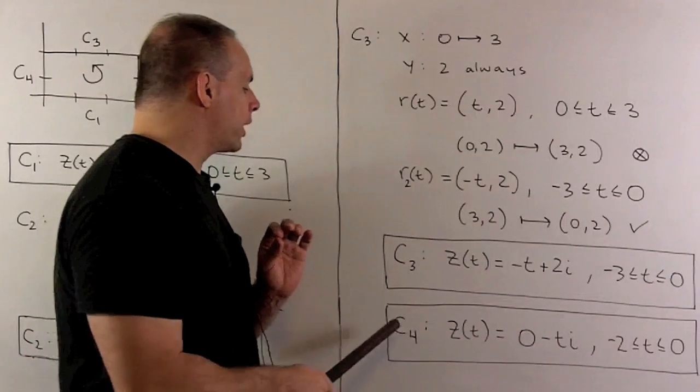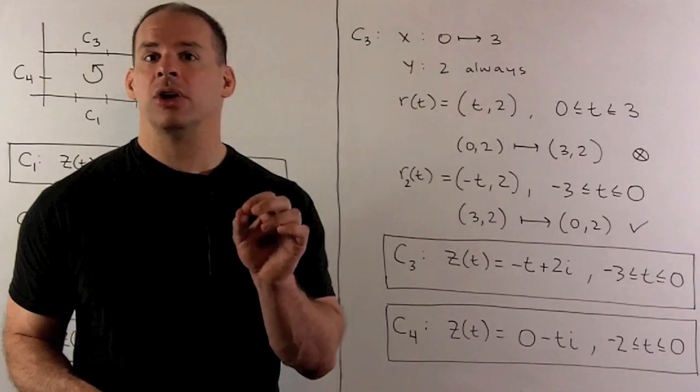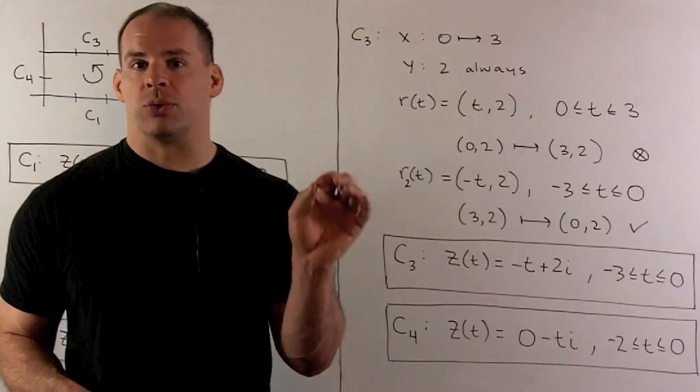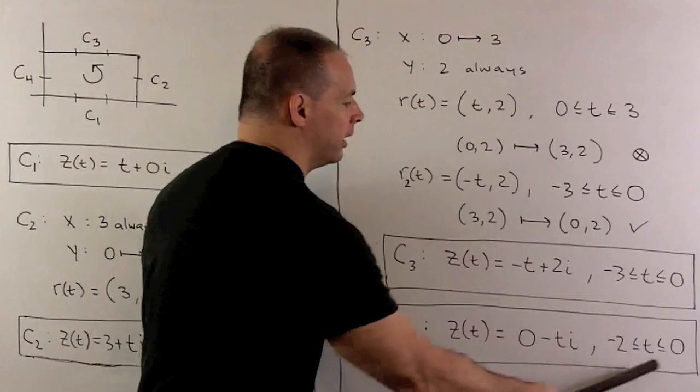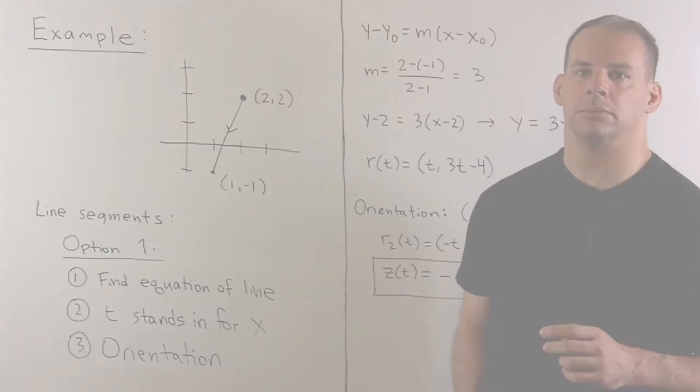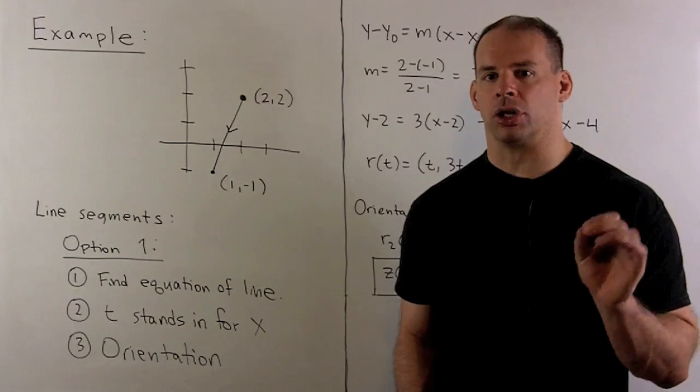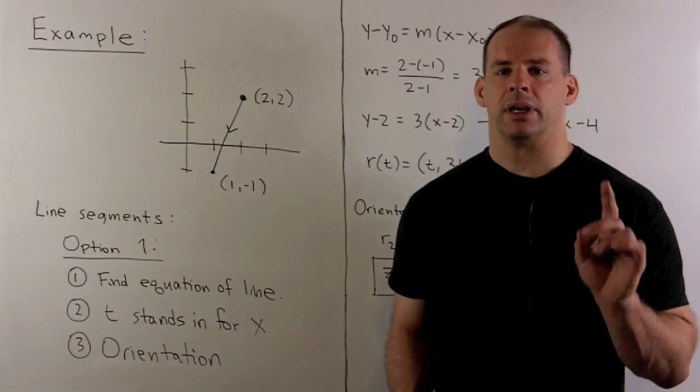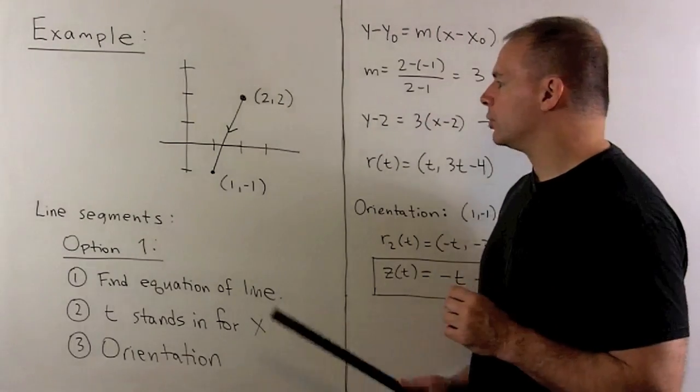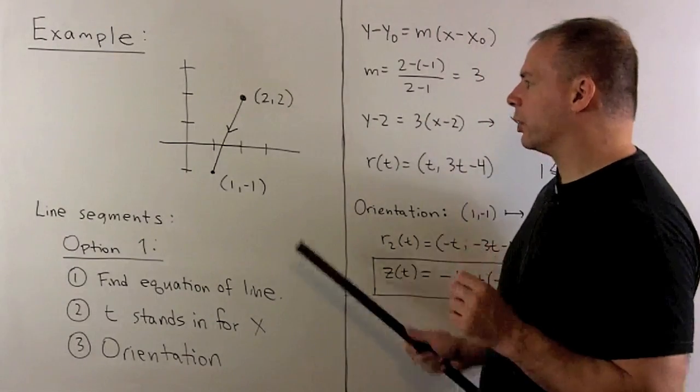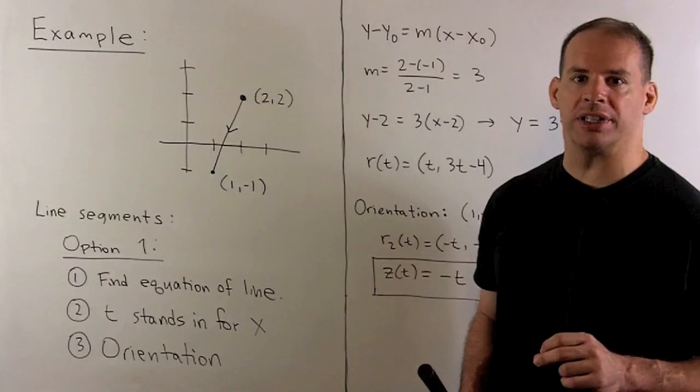Now, I'll let you work out the fourth one, but it's going to be the same idea. If you go with the natural parametrization, you're going in the wrong direction, you use the recipe, then that fixes it. So we wind up with this parametrization here. So, that takes care of horizontal and vertical line segments. If we have a slanted line segment, no problem. What we do is, we're just going to find the equation of the line that goes with that segment. We'll let t stand in for x, and then we just need to check the orientation.